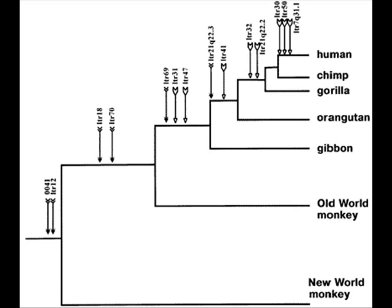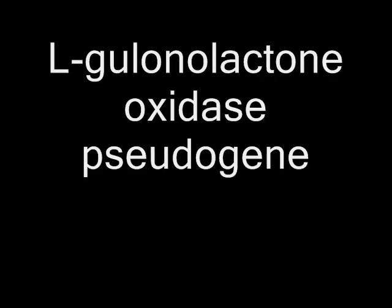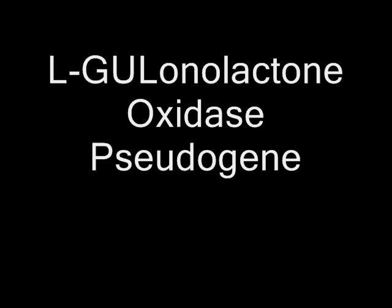For that to happen without common descent is so remote as to be impossible for all practical purposes. For links to some good ERV videos, look to the box on the right. Now, I haven't yet seen one on the L-gulonolactone oxidase pseudogene, try saying that ten times fast, also known as GULOP, which reinforces the ERV evidence and all the rest of it. That is the topic of this video.